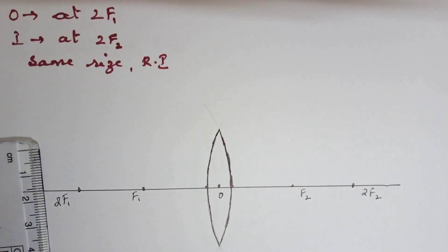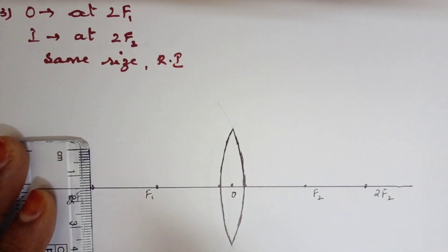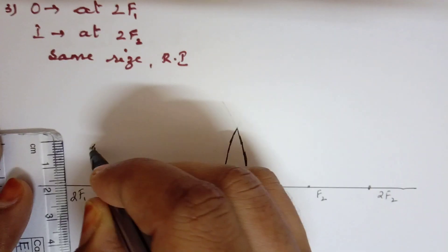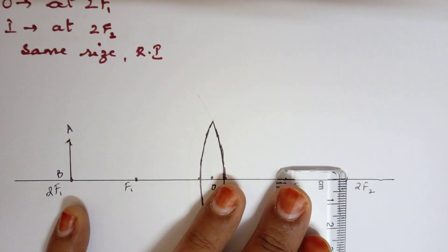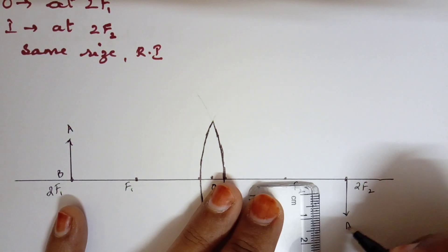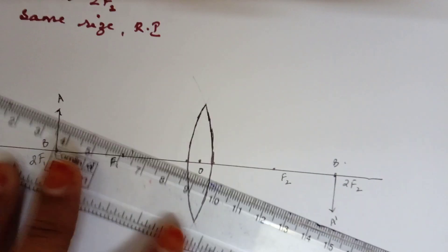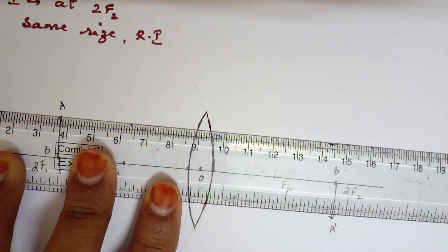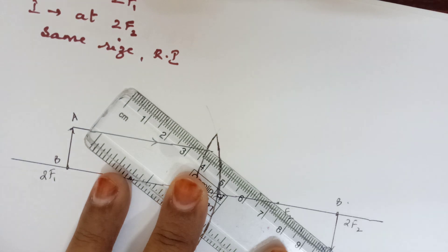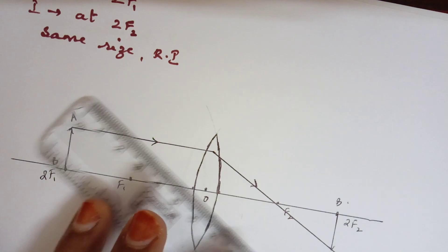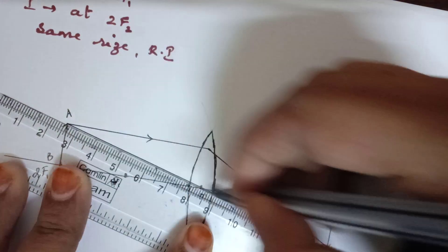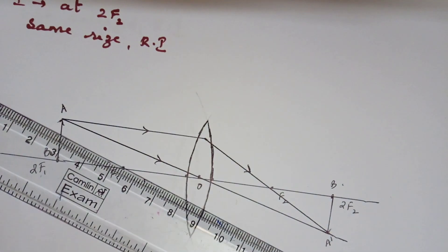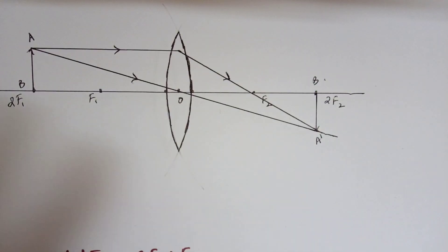For the third case, when the object is at 2F1, I need the same size image. I am going to keep AB at 2F1 and draw the image A'B' of the same size, 1.5 cm, at 2F2. One ray of light runs parallel and then passes through F. I show this with dotted lines connecting. The second ray of light passes through O, keeping A', O, and A all in the same line. The ray diagram is ready for this case.